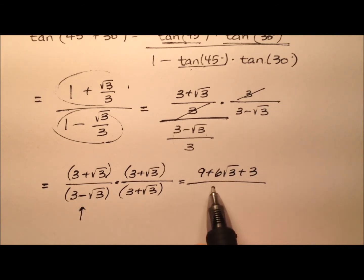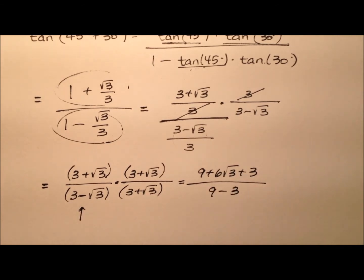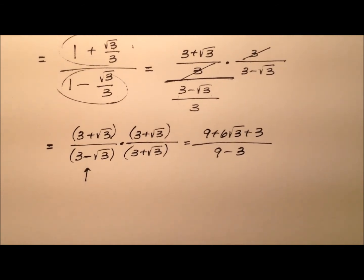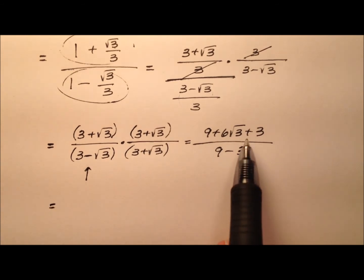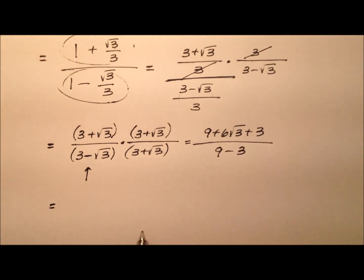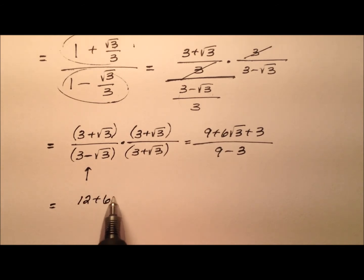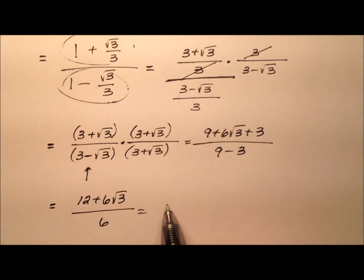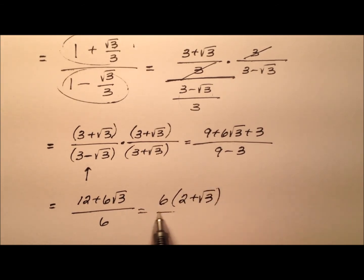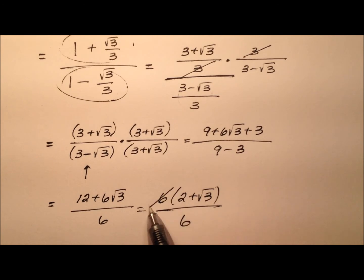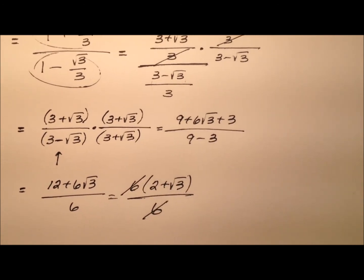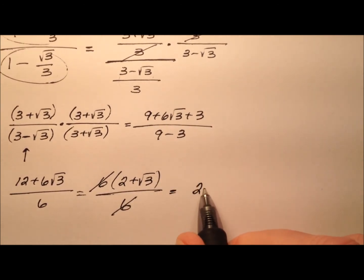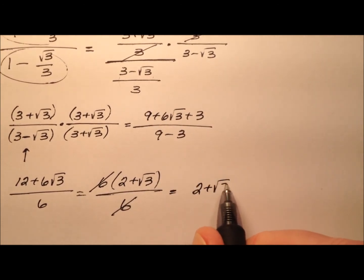And the denominator will be 9 minus 3. Combining like terms: 9 and 3 give us 12 plus 6 radical 3, all over 6. In the numerator, I can factor out a 6 and those 6s cancel.